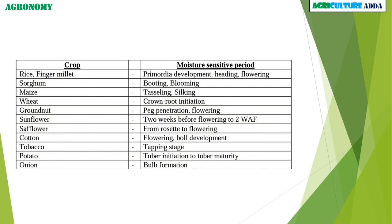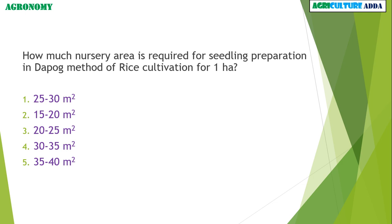Next question: how much nursery area is required for seedling preparation in the dapog method for rice cultivation per one hectare? Options are 25–30 m², 15–20 m², 20–25 m², 30–35 m², or 35–40 m². The answer is 25–30 m².